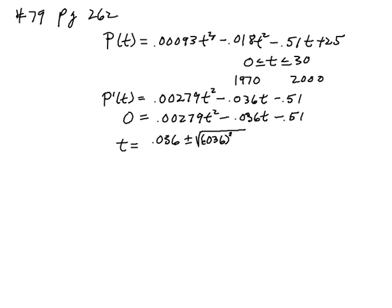So the negative would go to positive. Minus 4 times a, which is .00279, times b, which is negative .51.